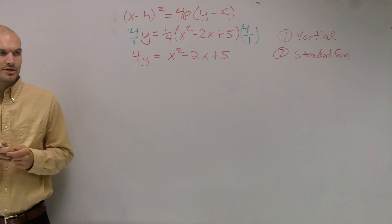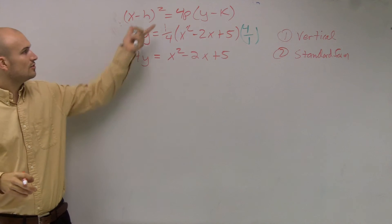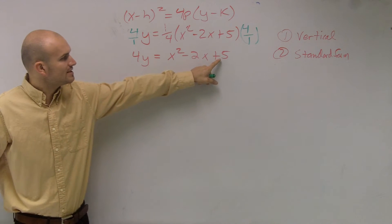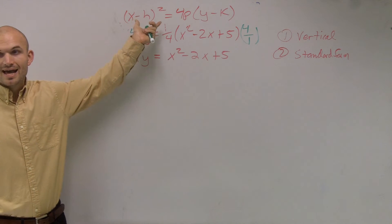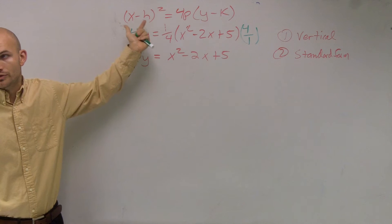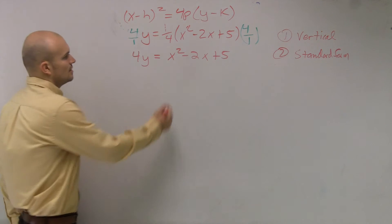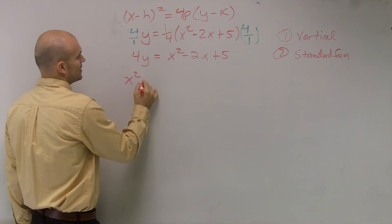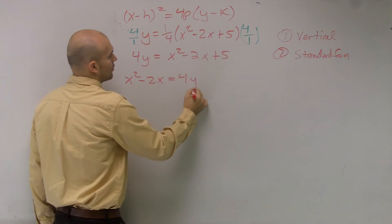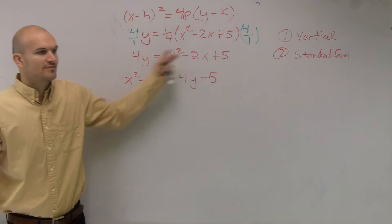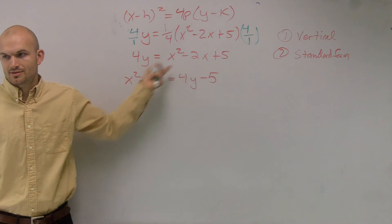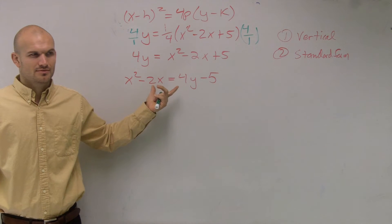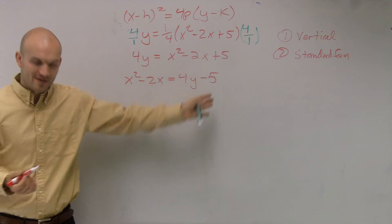Then I'm going to get the x's on the left side so it looks more like the standard form, and put the y's on the other side. I'm going to put this 5 with the y's, because the x side should just have the x squared term — no other numbers except for h. So I rewrite this as x squared minus 2x equals 4y minus 5. I subtracted 5 on both sides and then swapped the equation.